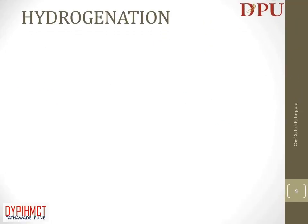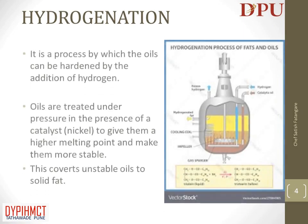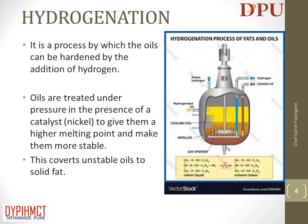In this slide we will talk about hydrogenation of fats and oils. It is a process by which oils can be hardened by the addition of hydrogen. Oils are treated under pressure in the presence of a catalyst, usually nickel, to give them a higher melting point and make them more stable. This converts unstable oils to solid fat.